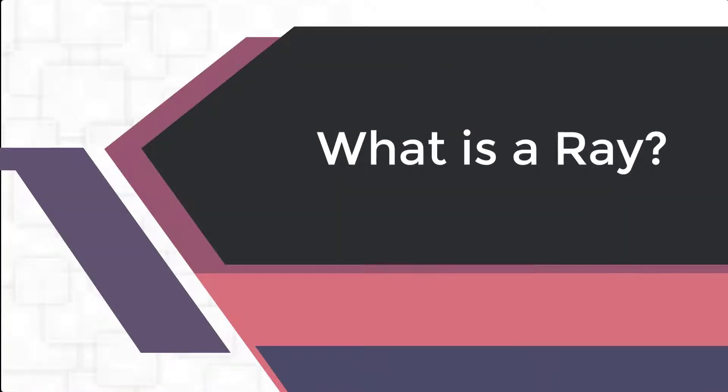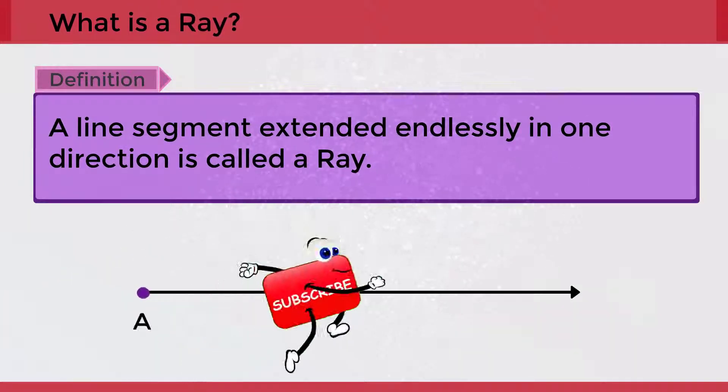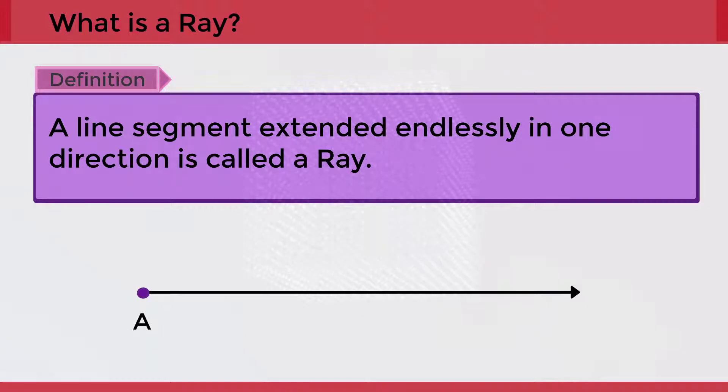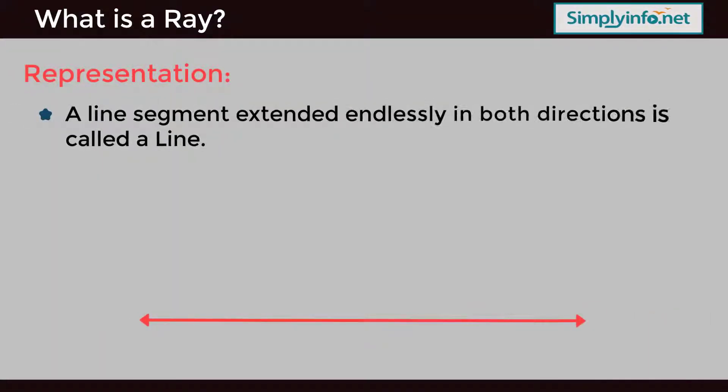What is a ray? A line segment extended endlessly in one direction is called a ray. A line segment extended endlessly in both directions is called a line.